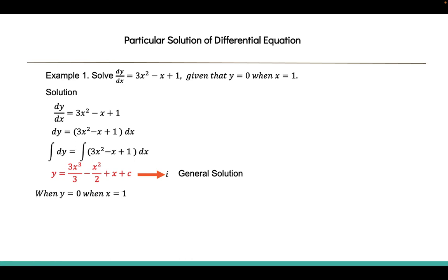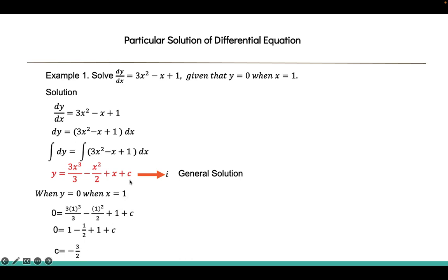To get the particular solution, put y = 0 and x = 1 into Equation 1. So 0 = 3(1)³/3 - (1)²/2 + 1 + C. After simplification, the value of C equals -3/2. Substituting this value of C back into Equation 1 gives y = x³ - x²/2 + x - 3/2, which is the particular solution.